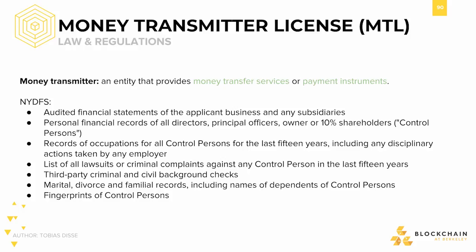Some of the things that the New York Department of Financial Services has done before giving a license to a bank include, but are not limited to, auditing financial statements of the applicant's business or any subsidiaries, investigating the personal financial records of directors, owners, and others, seeing a list of all lawsuits filed against any controlled person in the last 15 years, and performing third-party criminal and civil background checks. This depth of regulation is meant to protect consumers from businesses mishandling their money, but it consequently makes performing these services enormously difficult.